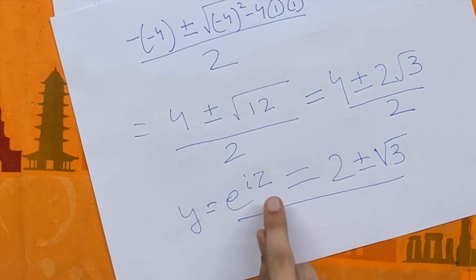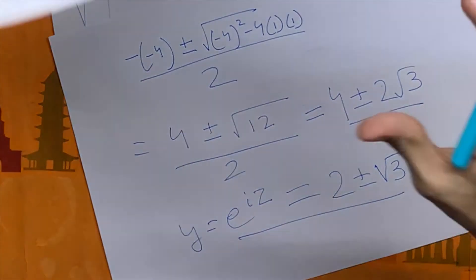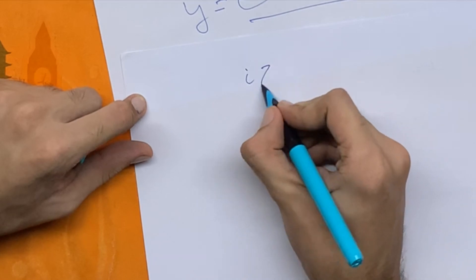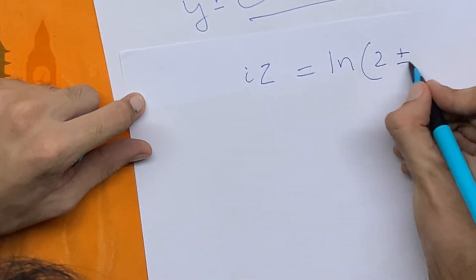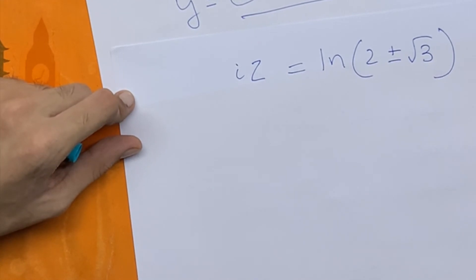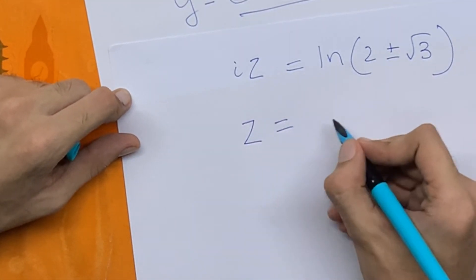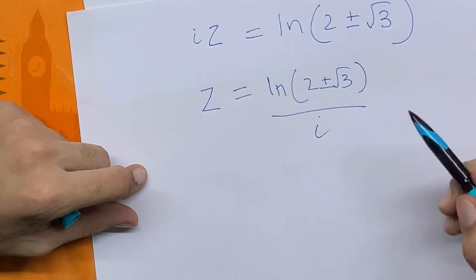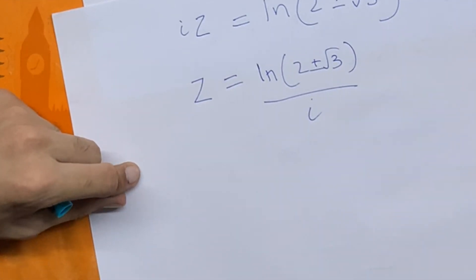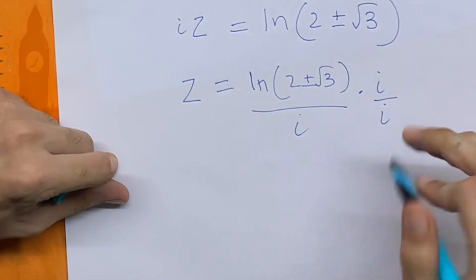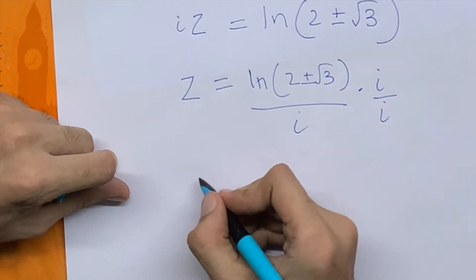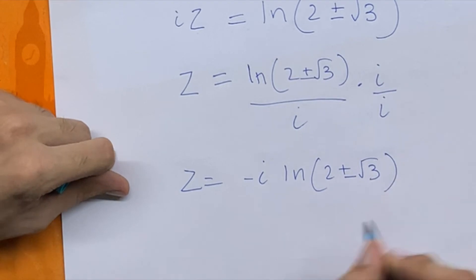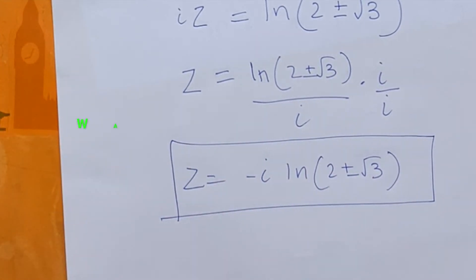But we still have to solve for z, so I'm going to take this further. We're going to take the natural log of both sides, and we'll be left with i times z is equal to the natural log of 2 plus or minus root 3. Now if we divide both sides by i, we have z is equal to the natural log of 2 plus or minus root 3 upon i. Because we want i in the numerator, we'll multiply the numerator and denominator by i. Here it becomes i squared, which is minus 1. So we have z is equal to minus i times the natural log of 2 plus or minus root 3. And there we have our answer for cos z is equal to 2.